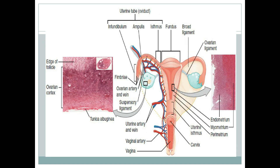That completes our discussion of the anatomy of the female reproductive system. To summarize: we have the ovaries, then the fallopian tubes with fimbriated ends and three parts — infundibulum, ampulla, and isthmus — then the uterus with its three parts — fundus, body, and cervix — and finally the vagina. If you liked this video, please don't forget to subscribe.